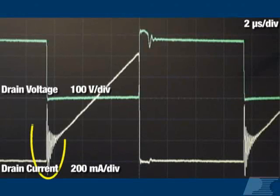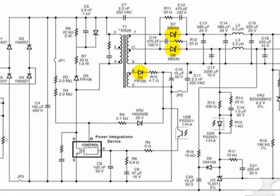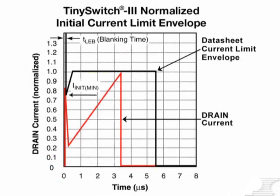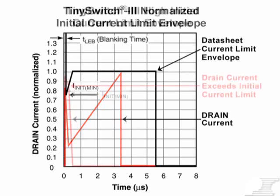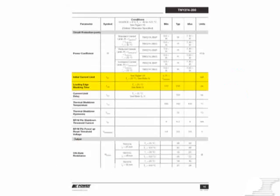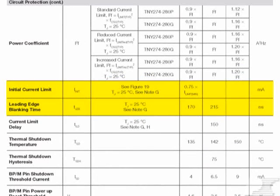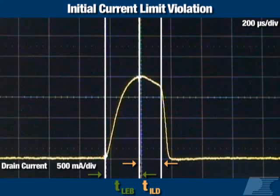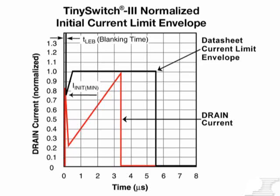Under these conditions, measure the initial current turn-on spike which occurs when the MOSFET is switched on. This spike is normal in switching power supplies. It may be caused by output diode or bias winding diode reverse recovery times, drain node capacitance, and snubbers across the MOSFET or transformer windings. Power Integrations devices incorporate leading edge blanking, which disables the current limit for a fixed period immediately following MOSFET turn-on. This prevents the initial current spike from triggering the current limit and prematurely terminating the switching cycle. However, if the turn-on spike is larger than normal, it can trigger the initial current limit of the device and cause it to limit power transfer to the output. The leading edge blanking time and the initial current limit at the end of leading edge blanking can be found in the datasheet for your device. Next, measure the current level through the MOSFET at the end of the leading edge blanking time and compare this value with the initial current limit in the datasheet. If the value you measure is greater than the initial current limit, then this may be the source of your power delivery problems.